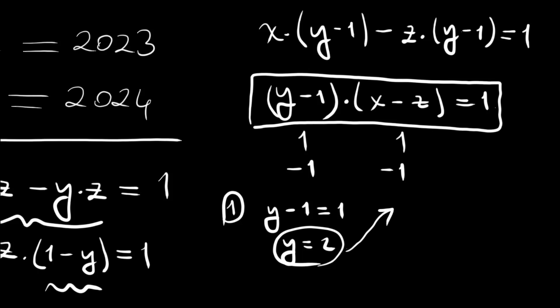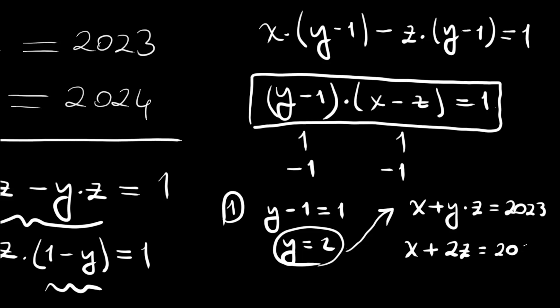Since y equals 2, substituting into x plus y times z equals 2023 gives us x plus 2z equals 2023. Also, from x minus z equals 1, we get a second equation. Now we try to solve this system of two equations.